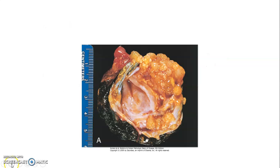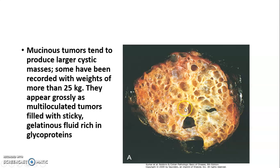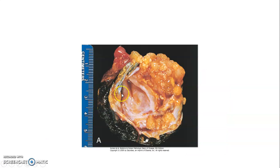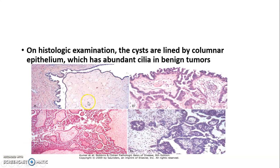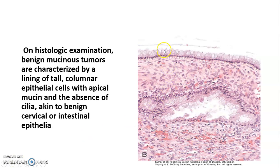In serous tumours you will see a unilocular cyst with clear serous fluid and many papillary excrescences. In mucinous tumours you will have a multilocular cyst filled with sticky mucinous material. On histology, serous cysts are lined by columnar epithelium with abundant cilia, while mucinous tumours show tall columnar lining with mucin and absence of cilia.